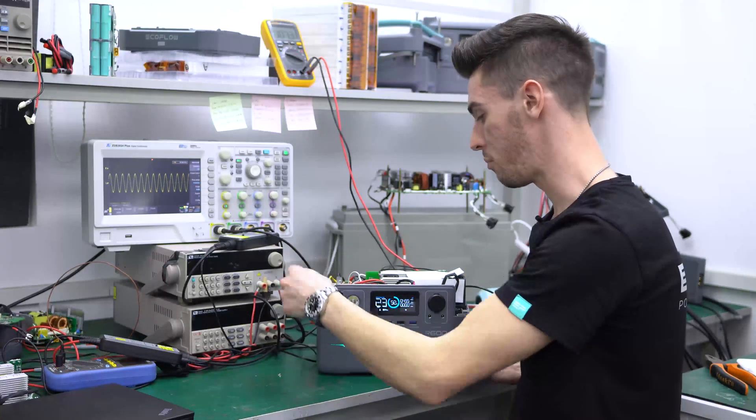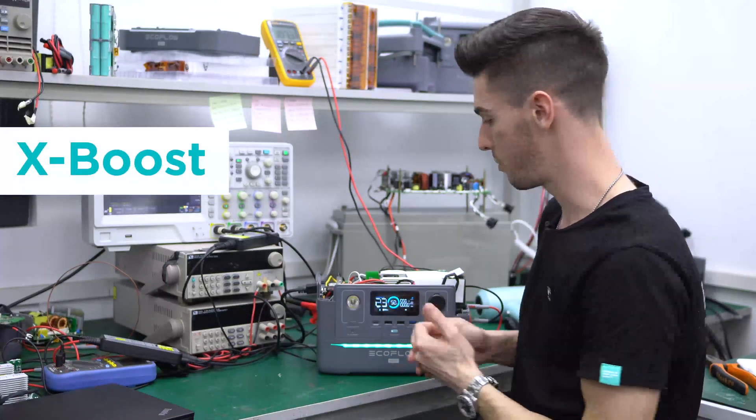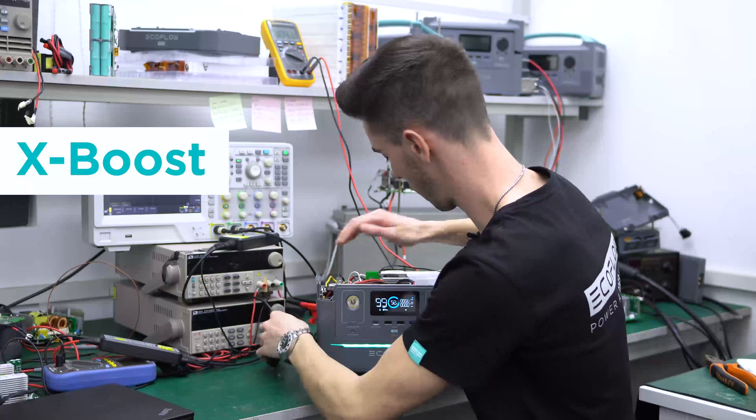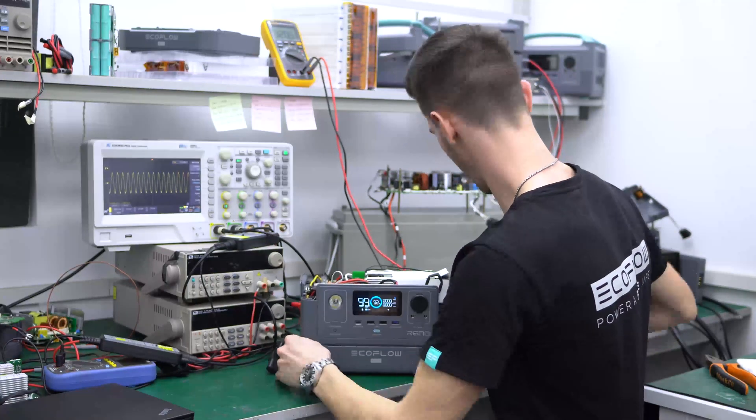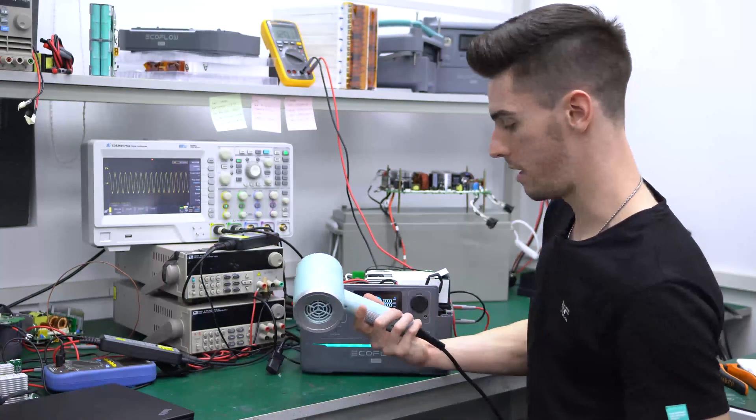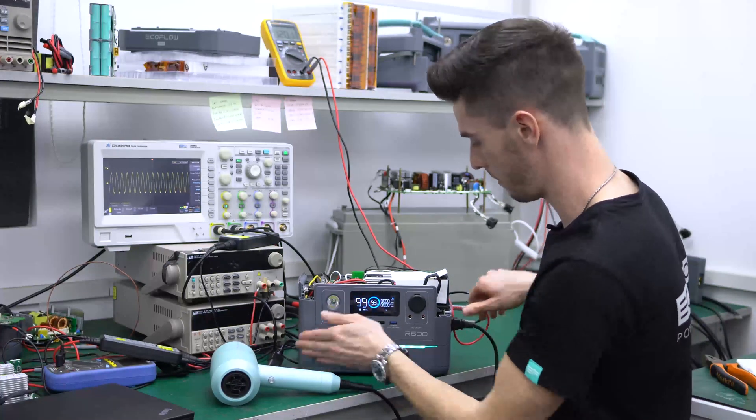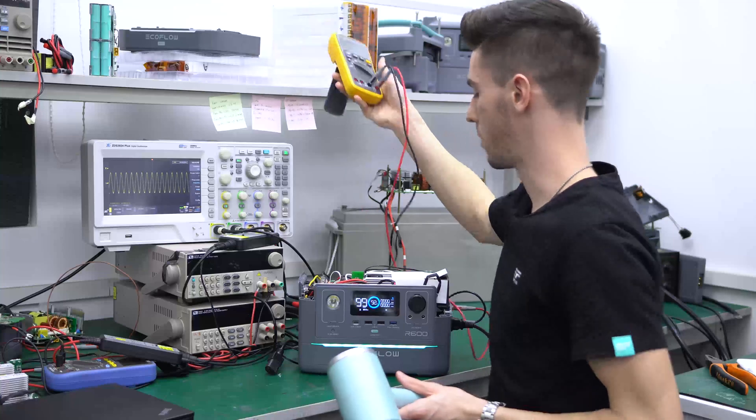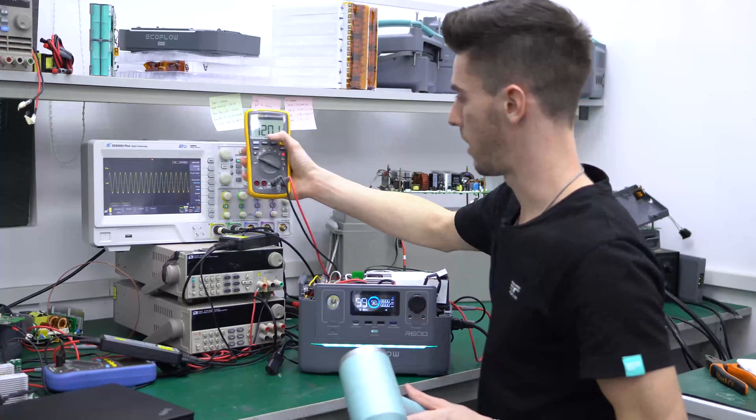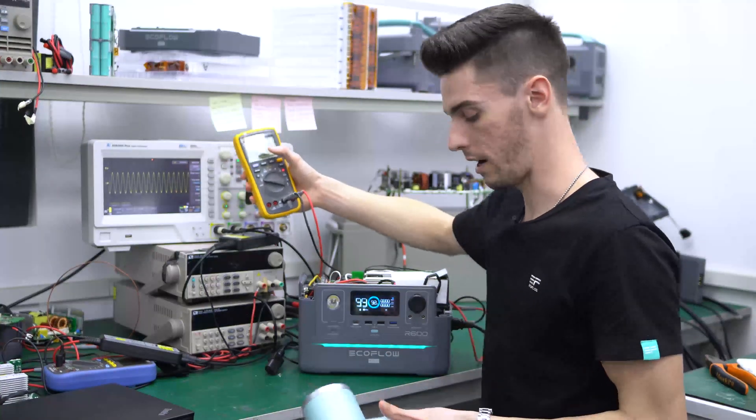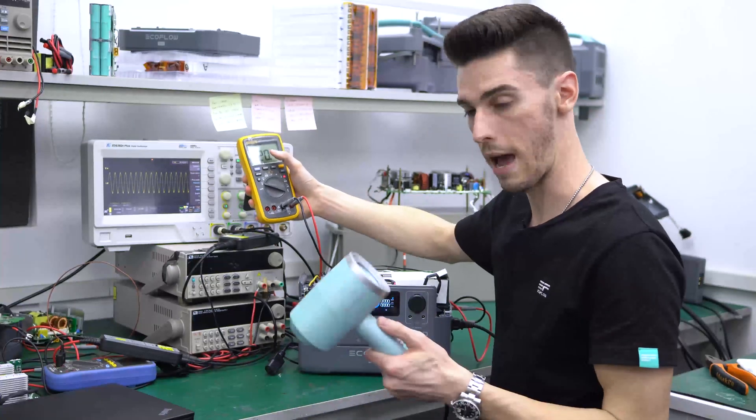So I'm going to unplug the AC input and show you the next feature, which is X-Boost. So we have the trusty 1200 watt hair dryer I'm going to plug into the AC output. And I'm going to grab my multimeter so that you can see this is displaying the voltage. So we're at 120 volts right now. So I'm going to turn this on max.